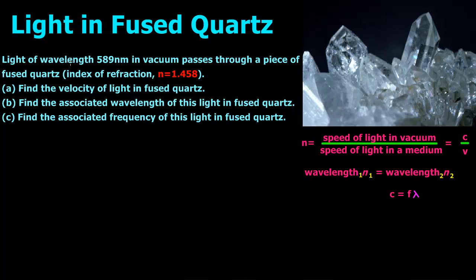Hi guys, today we're talking about light and fused quartz. The problem states that light of wavelength 589 nanometers in vacuum passes through a piece of fused quartz with an index of refraction of 1.458.